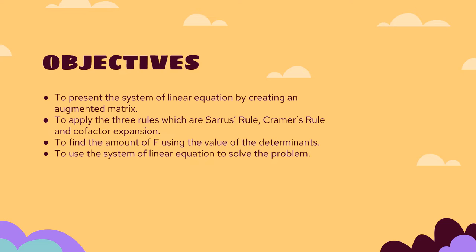My name is Muhammad Abdul Alamin and I am about to explain the objectives of this case study. The first objective is to present the system of linear equations by creating an augmented matrix. The second objective is to apply three rules: Sarrus' rule, Cramer's rule and co-factor expansion. The third objective is to find the amount of F using the value of the determinants. And the last objective is to use the system of linear equations to solve the problem.